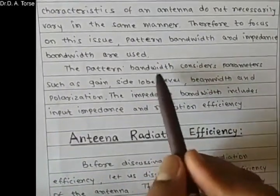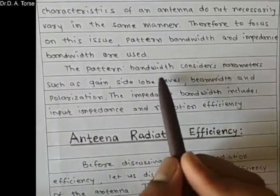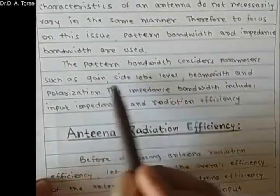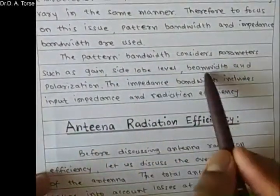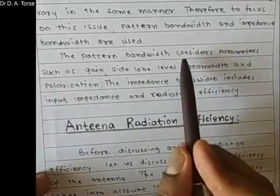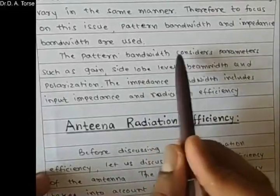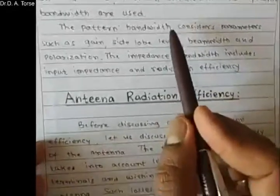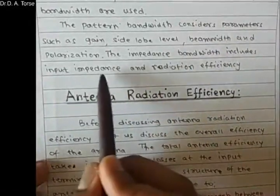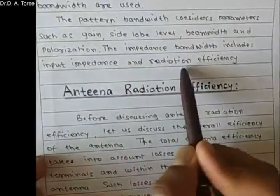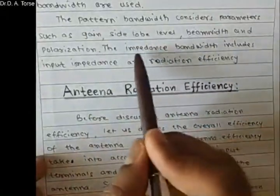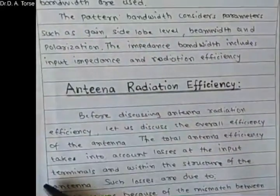Pattern bandwidth is a term defined for antennas where pattern parameters such as gain, side lobe, beam width, and polarization satisfy a range of values within given frequency bounds. Impedance bandwidth includes input impedance and radiation efficiency. Thus we have two types: pattern bandwidth and impedance bandwidth.